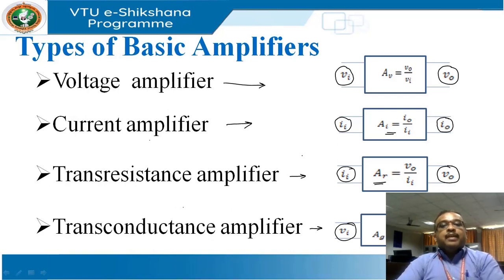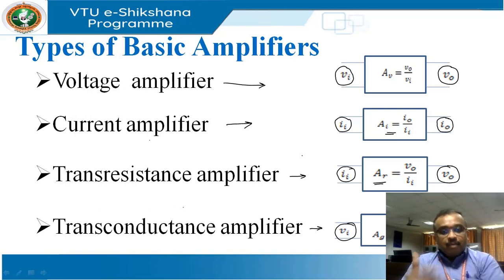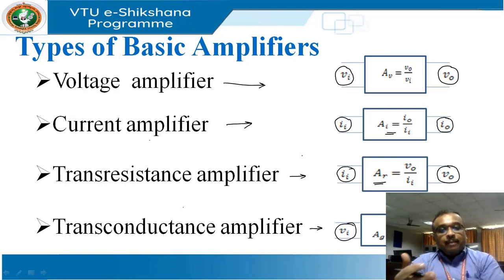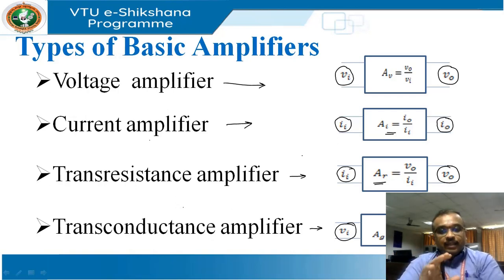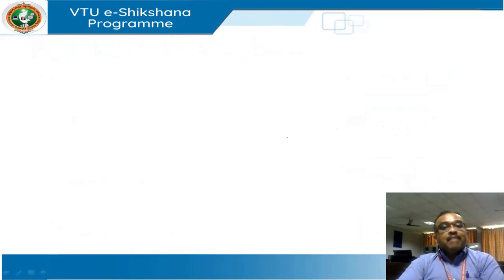These are the four basic amplifiers. When we arrive at topologies, we use these basic amplifiers and connect the feedback network to them. Based on that combination, we say it is so-and-so topology. These four basic amplifiers play a major role, and beyond that, we apply negative feedback to gain its advantages.